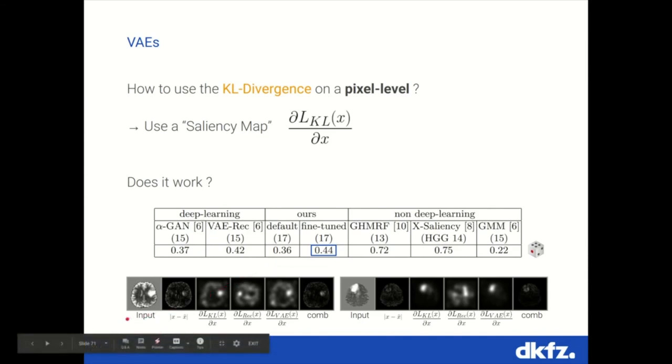So, here we further have some visualizations, where we have the input, the reconstruction error, then the KL loss derivative, the reconstruction error derivative, and the variational lower bound loss derivative, which hopefully approximate the ELBO. So, as you can see here, the KL loss works quite well, and the VAE loss is kind of mostly influenced by the KL loss as well.